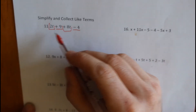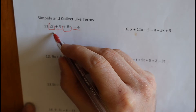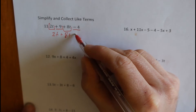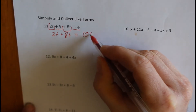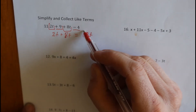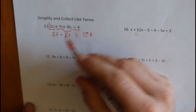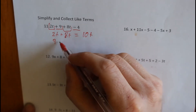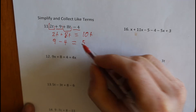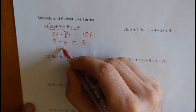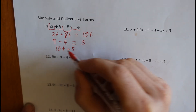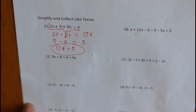So we just add them together. 2t plus 8t will give us 10t. And we have positive 9 take away 4, or positive 9 plus negative 4, whichever way you want to look at it. So 9 take away 4 equals 5, and then you just write it all out: 10t plus 5. And that's your answer, 10t plus 5.